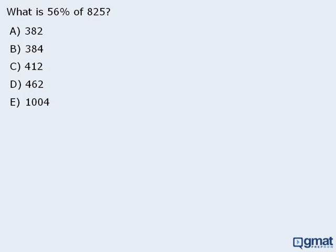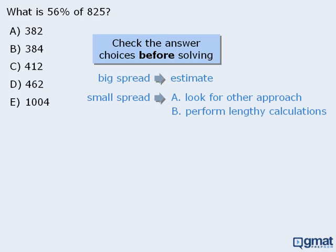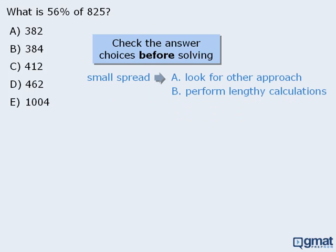For example, can we estimate? Well, to answer that question, we must first check the answer choices. Since the first four answer choices are so close together, we really can't estimate. So we must find a different approach, or perform the calculations we looked at earlier.